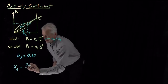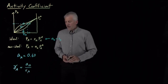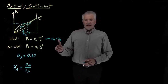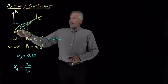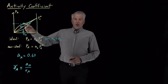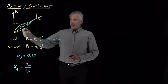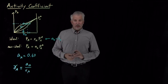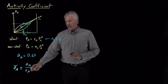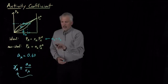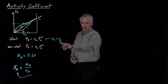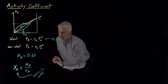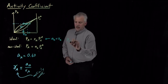If I take the activity divided by the mole fraction, I'm defining the activity coefficient. Remember, in a perfectly ideal solution, the activity and the mole fraction are the same. In a system with positive deviations, the activity is going to be greater than the mole fraction, because the partial pressure is greater than we'd expect. In a system with negative deviations, the activity is lower than the mole fraction. So I can use this ratio of activity to mole fraction to define how ideal the solution is. The activity coefficient will be exactly equal to 1 in the ideal case.